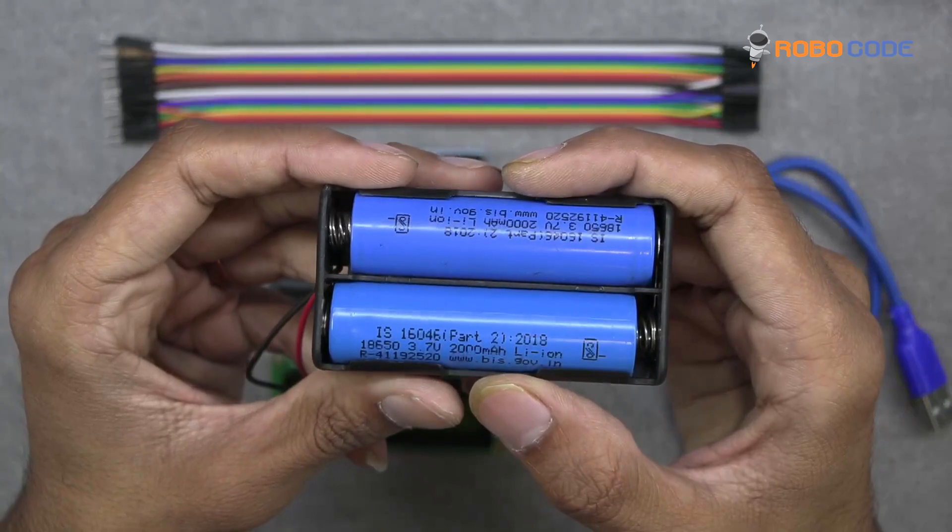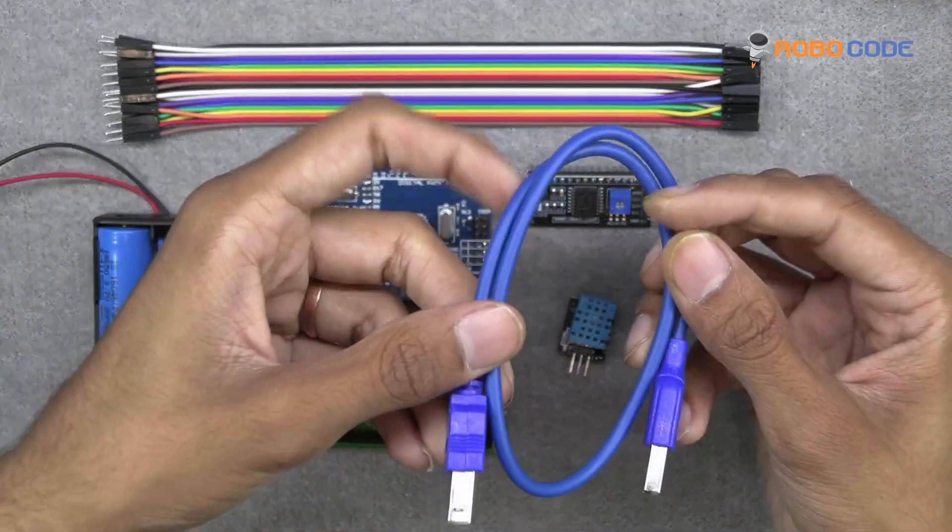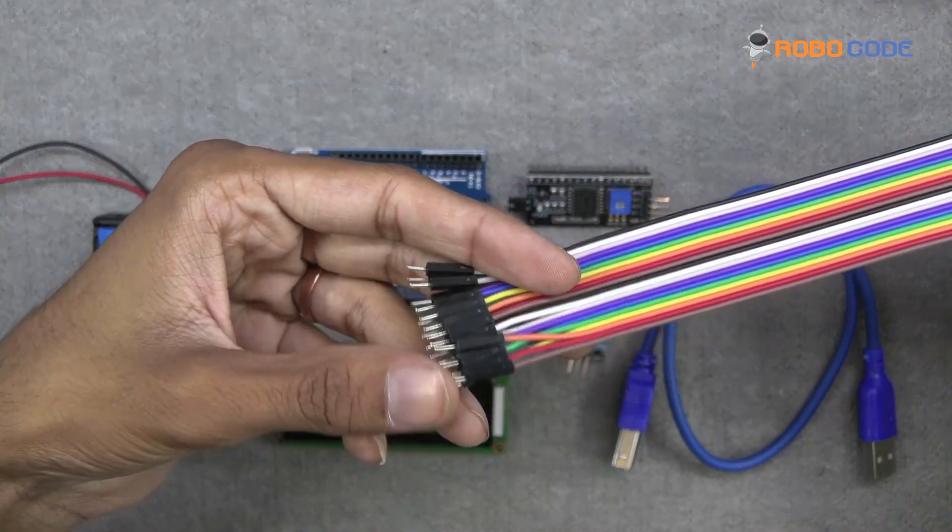Two 3.7V batteries along with the holder, one USB cable, and one male to female jumper wire, like a couple of jumper wires.